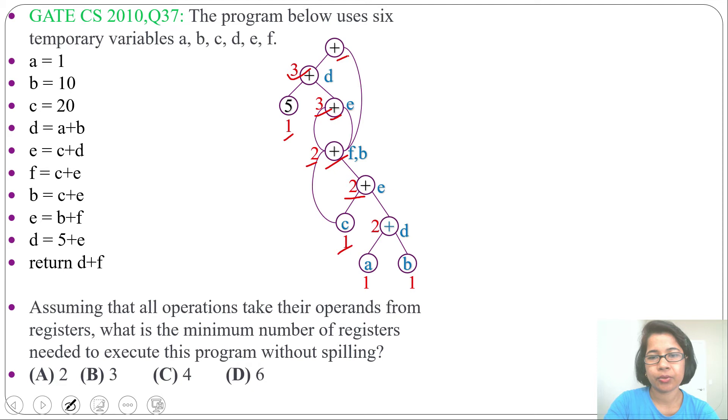Next for this plus node, one child have level 3, another child have level 2. So it will be level 3. The root level is 3. Means we require 3 registers for writing machine instruction for this. So answer will be option B, 3. This is one method designing level expression tree.